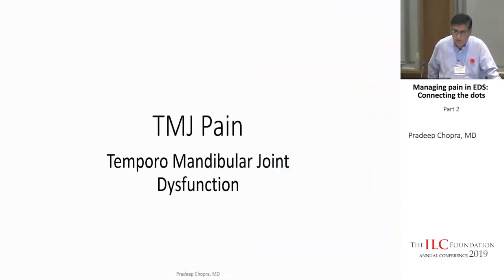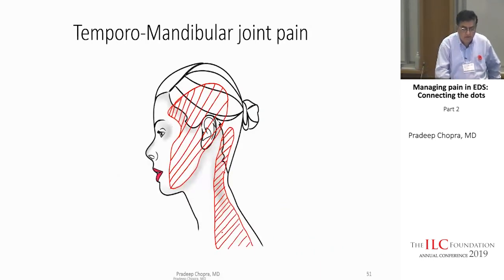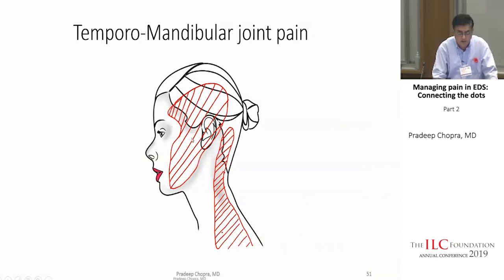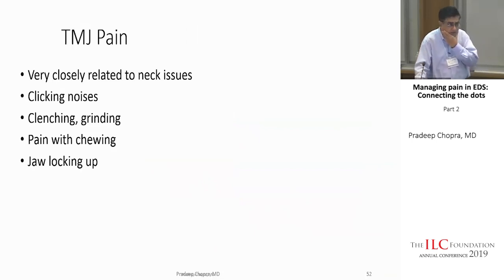Moving to temporomandibular joint pain. The TMJ is an inherently unstable joint because we need our jaws to open up and down and side to side to chew. In EDS patients, TMJ dysfunction adds to everything else. They present with pain around the head and jaw — mostly facial pain with lots of headaches that can spread to the neck and upper back. They have clicking noises when opening their mouth, a history of clenching and grinding, pain with chewing, and they often sublux the joint, getting it stuck and putting it back in.